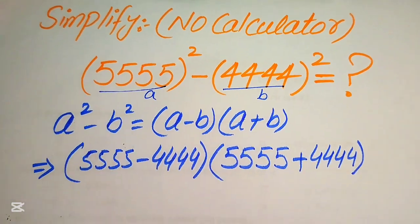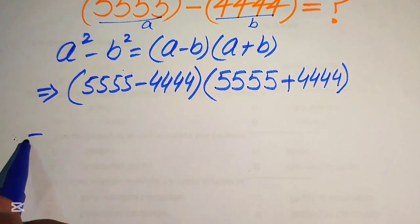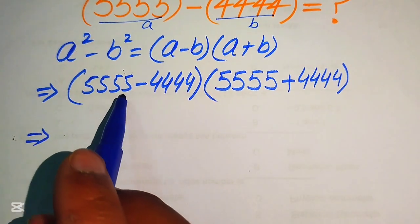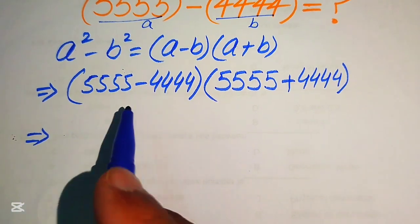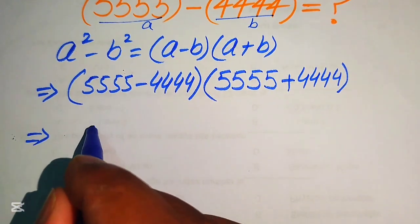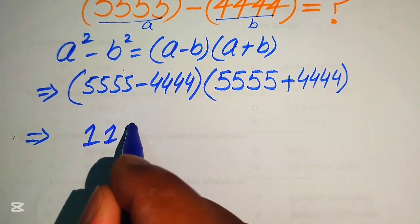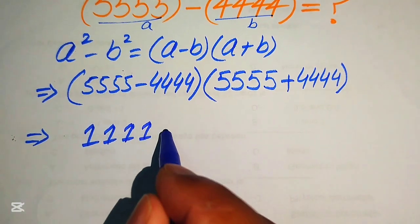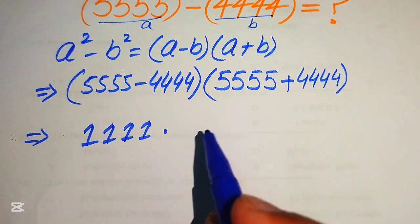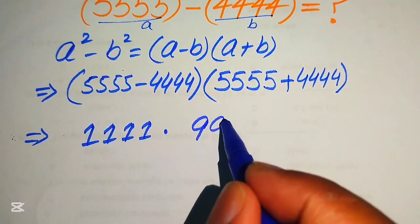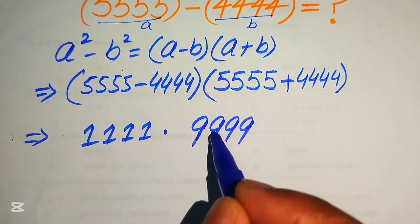We solve this in its lowest form. When we subtract 4444 from 5555 we obtain 1111, and when we add the two values we get 9999. So the expression becomes 1111 multiplied by 9999.